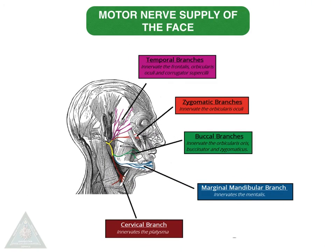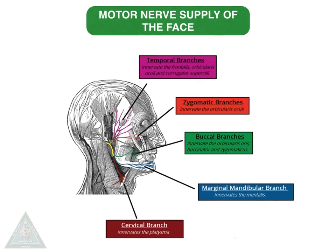The motor nerve supply of the face is by the five branches of the facial nerve, which are the temporal branches, zygomatic, buccal, marginal mandibular, and cervical branch.